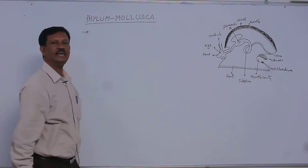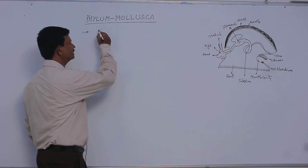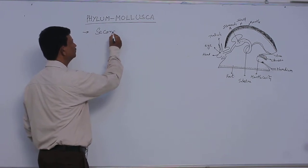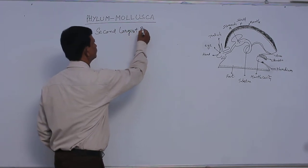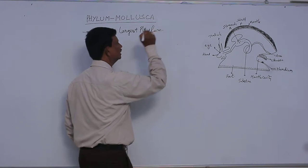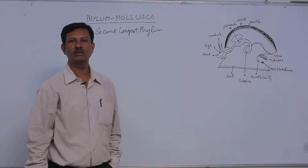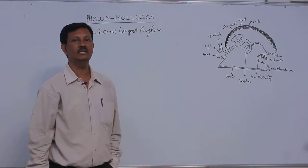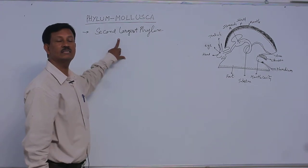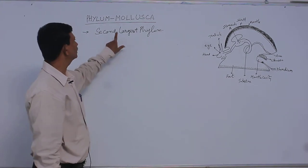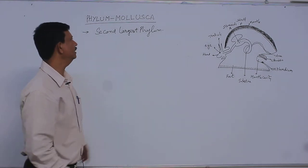The general characters of Phylum Mollusca are: this is the second largest phylum in the animal kingdom. The first largest phylum in the animal kingdom is Arthropoda, which includes nearly 1,10,000 above species. Here, nearly 1,00,000 species are included in this phylum, which is why it is known as the second largest phylum in the animal kingdom.